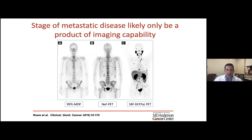The stage of metastatic disease is really just a product of imaging capability. This is the same patient at the same time point with three different imaging techniques: bone scan, sodium fluoride PET, and PSMA PET. Someone who originally would have been considered low-volume or lower-end metastatic disease can have quite substantial volume of metastases when we have better imaging to detect that.